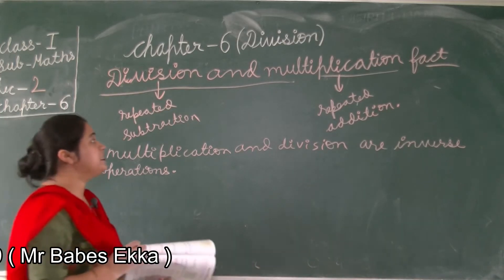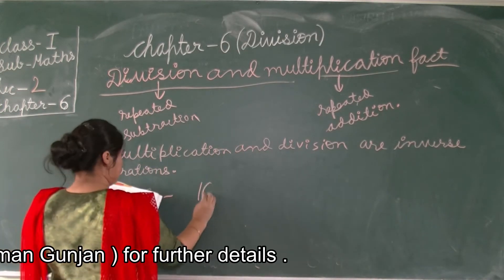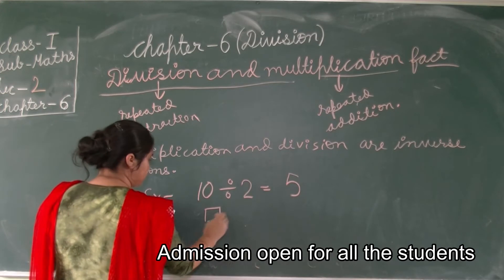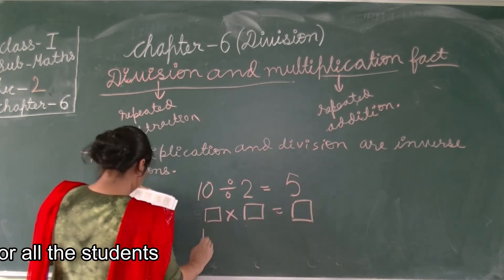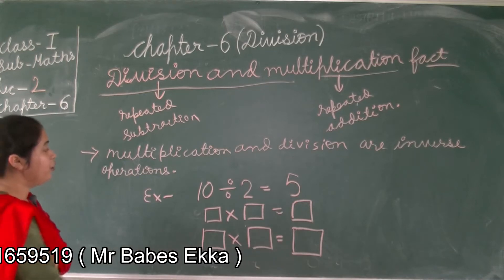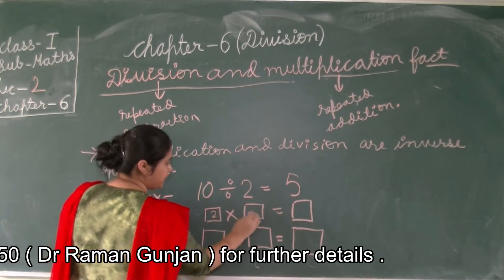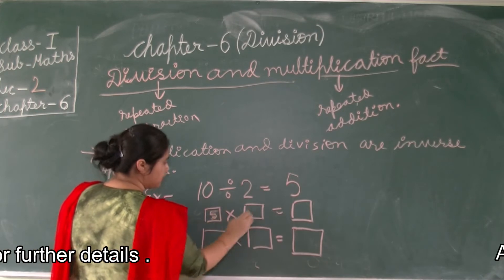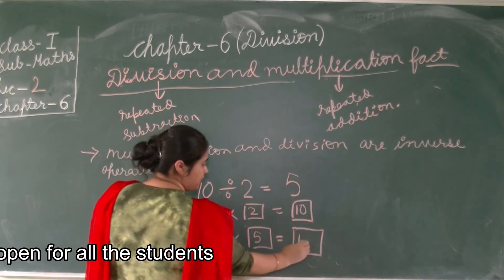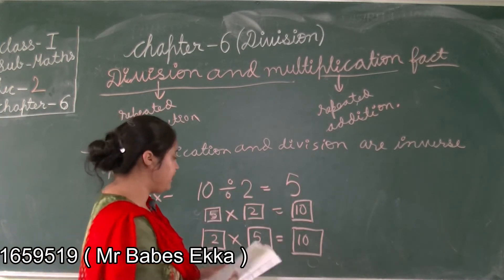Let us solve an example from your book, page number 98. The first example is 10 divided by 2 equals 5; you have to write two multiplication facts for this. The first multiplication fact is 5 multiplied by 2 equals 10, and the second multiplication fact is 2 multiplied by 5 equals 10. These are the two multiplication facts for one division fact.